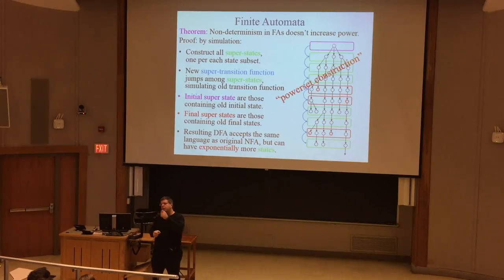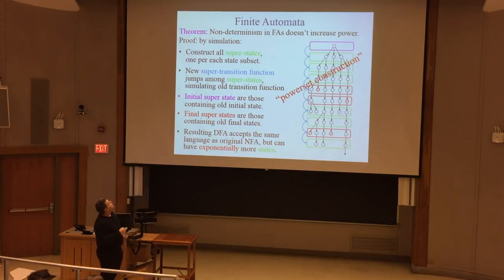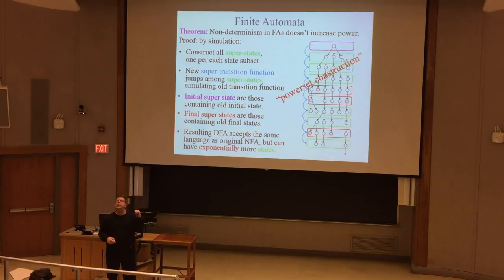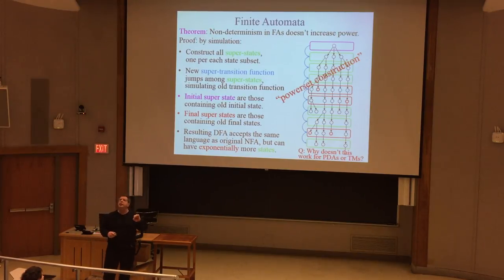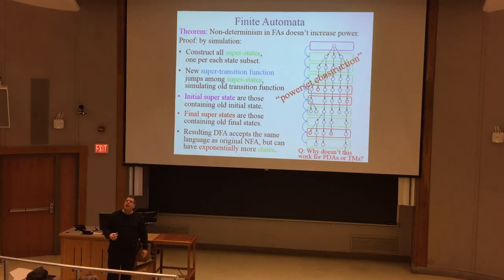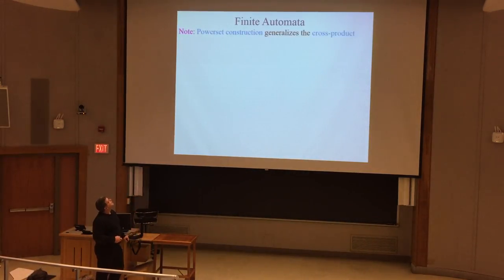The power set construction generalizes the cross product construction: the cross product allows pairs of states, while the power set allows arbitrary subsets, up to 2^K states. This construction took a non-deterministic machine and converted it into a deterministic machine accepting exactly the same language. Note: this works for finite automata and Turing machines, but not for pushdown automata - those are inherently non-deterministic and cannot be made deterministic without loss of recognition capability.